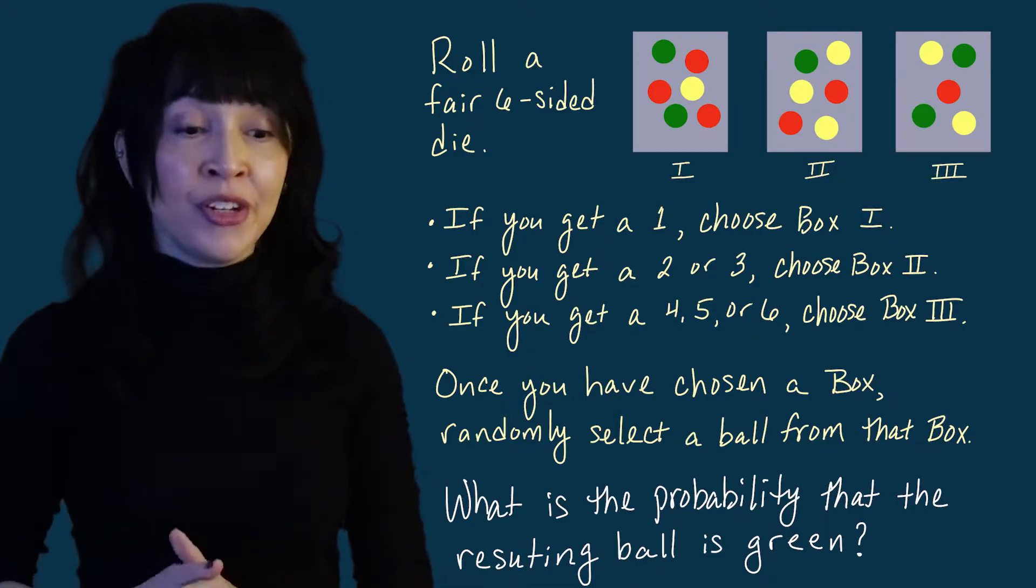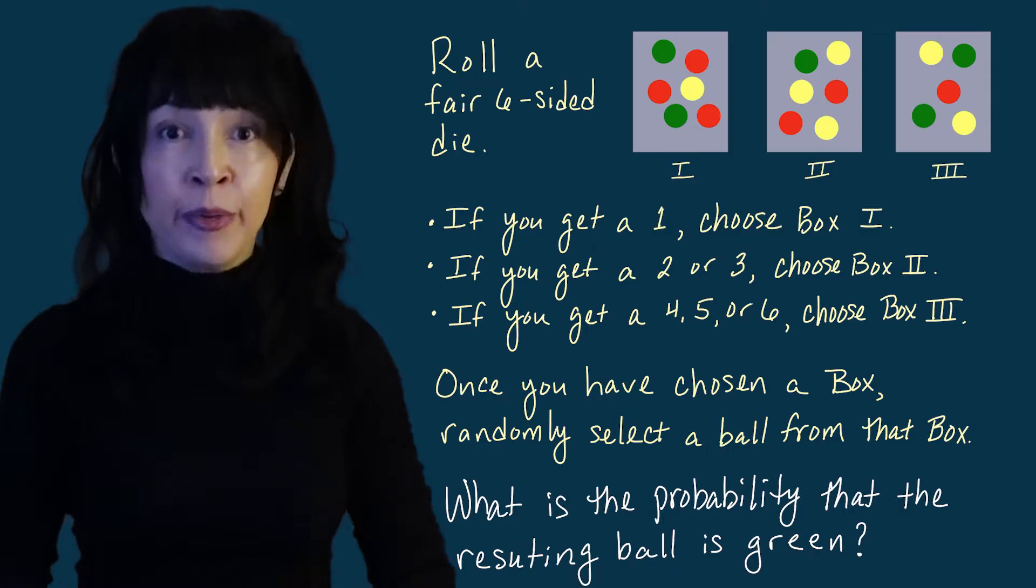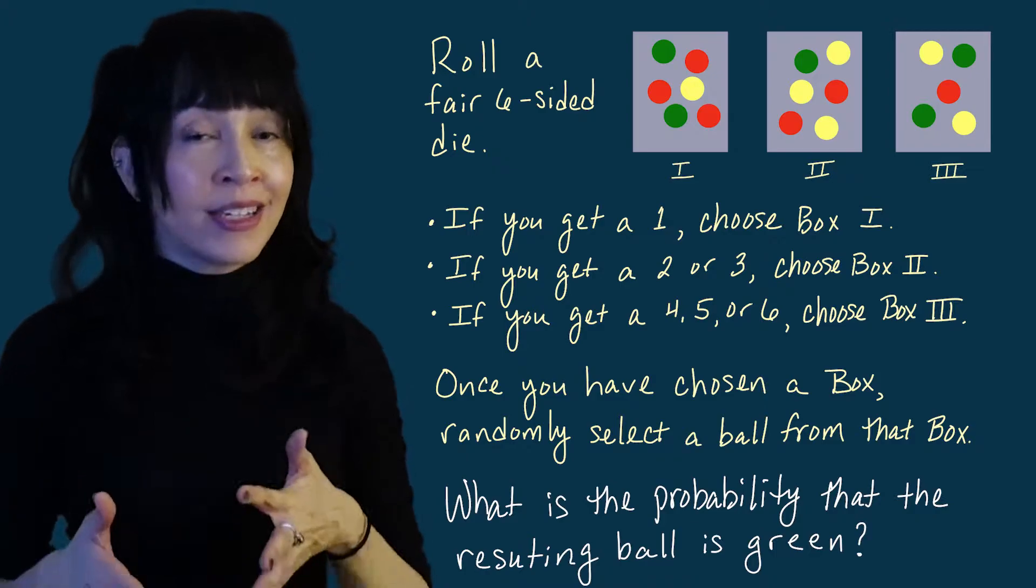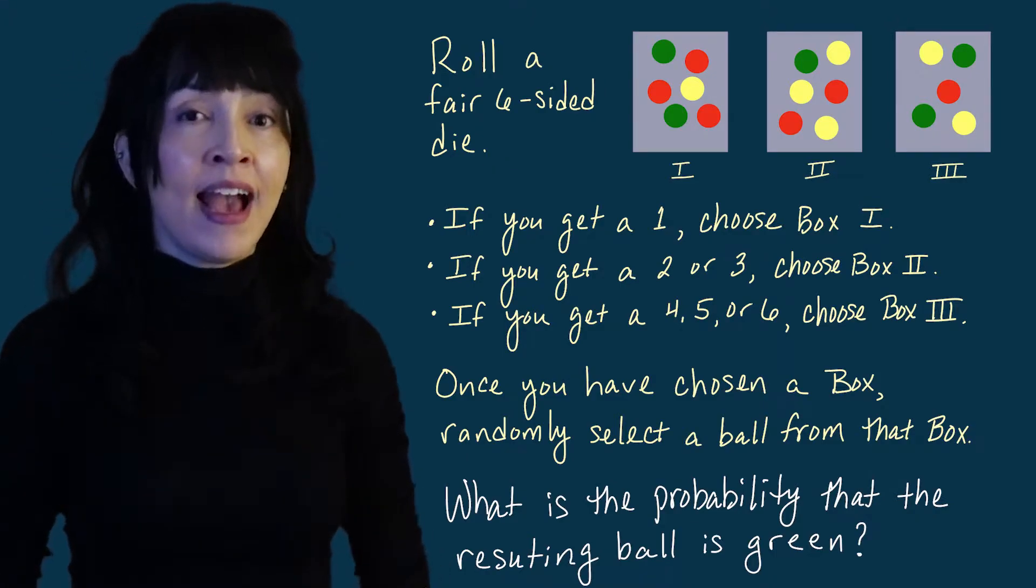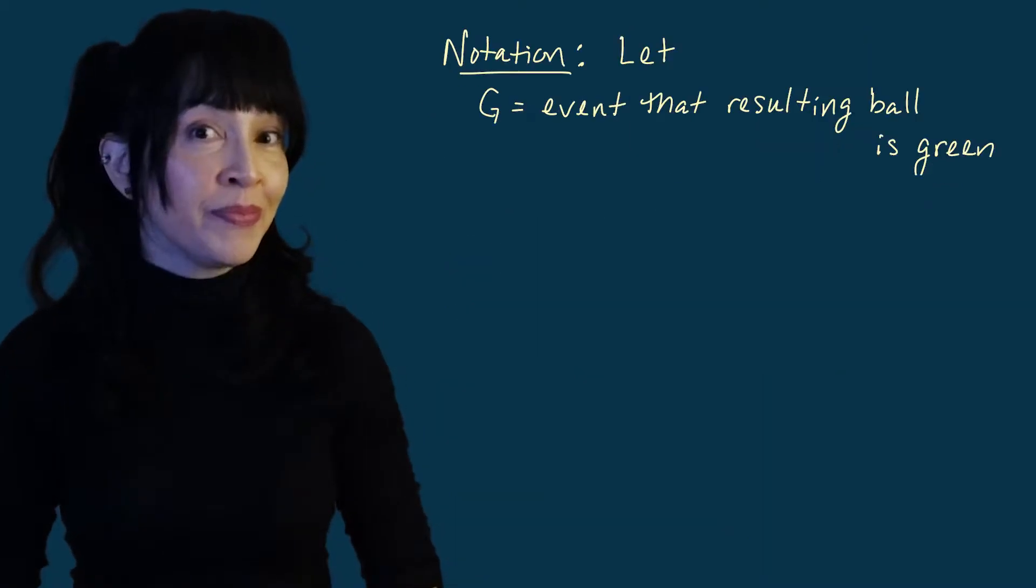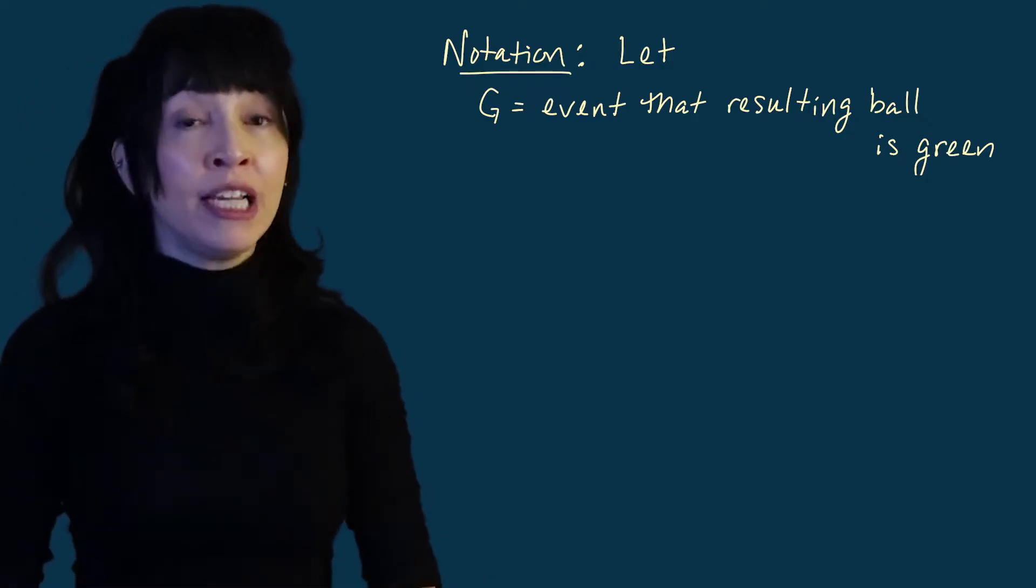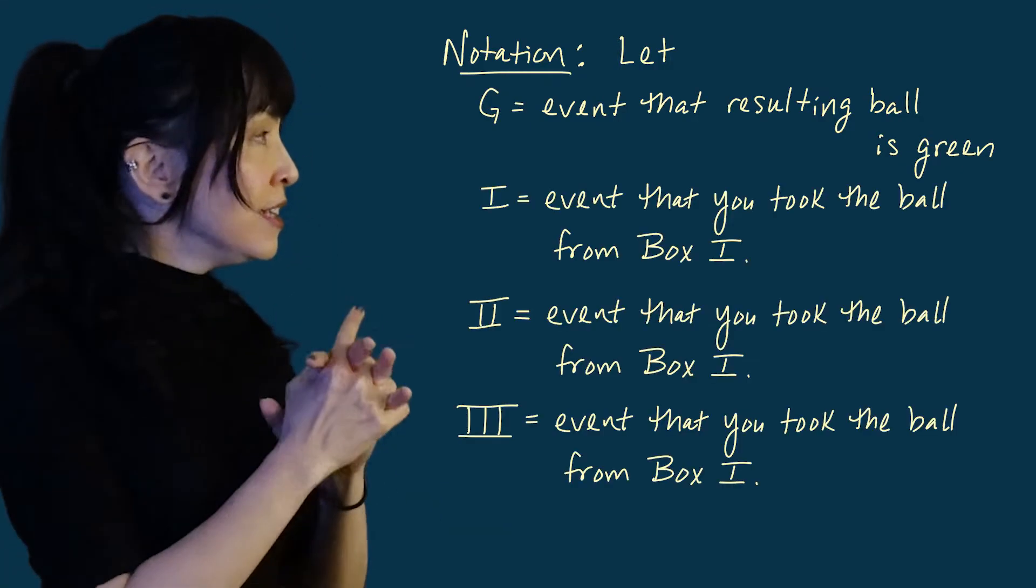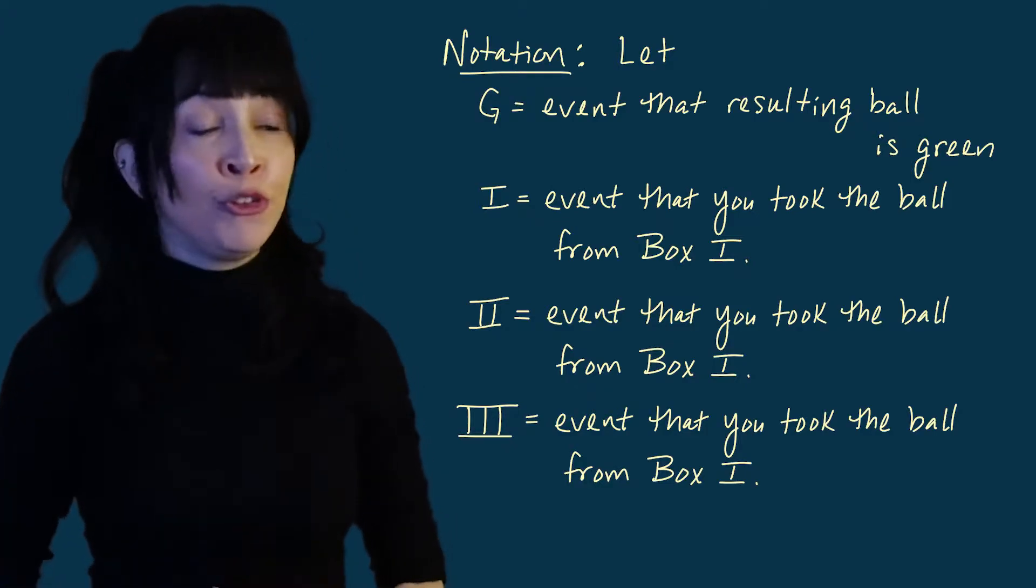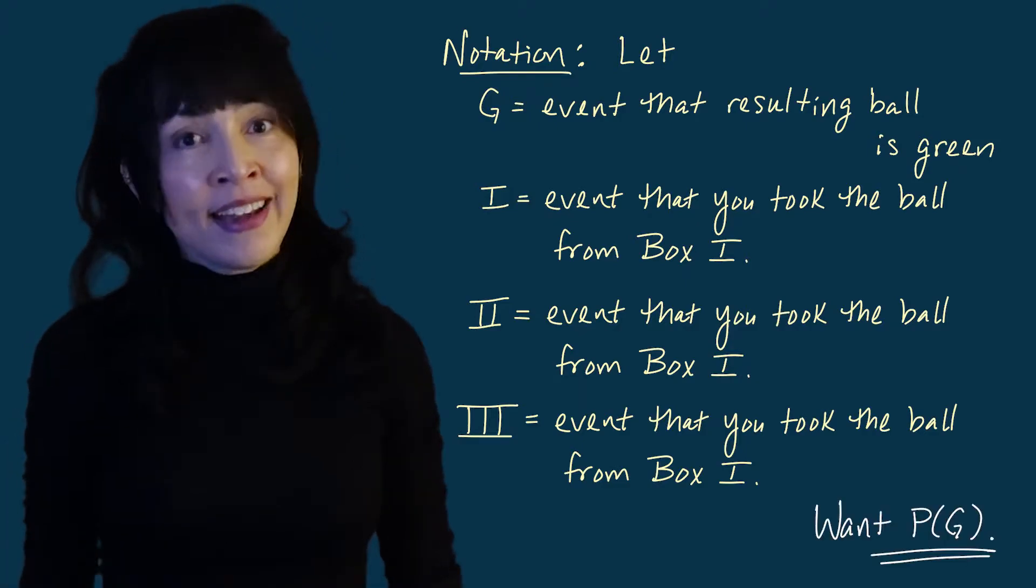So to answer the question, after we roll the die and choose the box and choose the ball, what is the probability we get a green ball? I am going to condition on which box the ball came out of. And to do that, I first am going to establish a little bit of notation. So I'm going to let this capital G be the event that the ball I draw is green. And I'm going to let these one, two, and three in roman numerals be the events that I choose from box one, two, or three respectively. And now we're ready to go.